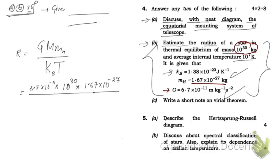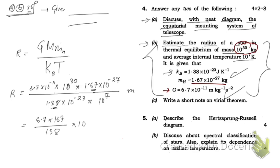k_B is 1.38 × 10⁻²³, and temperature T is 10⁷ Kelvin. Now handling the powers: in the numerator we have 10 to the power (−11 + 30 − 27) = 10⁻⁸. In the denominator, 10 to the power (−23 + 7) = 10⁻¹⁶, which when dividing gives +16. So the net power becomes 8.